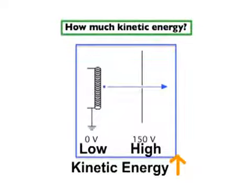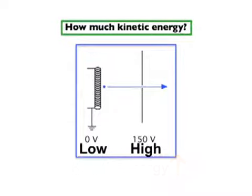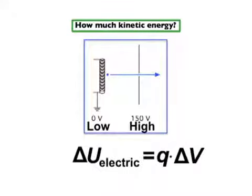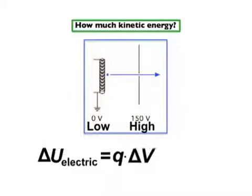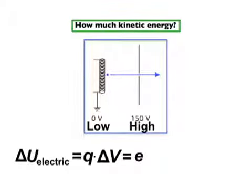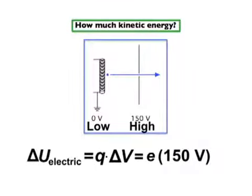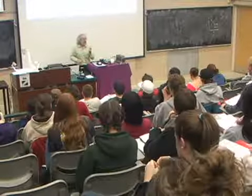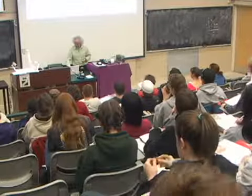Potential energy decreased and kinetic energy increased. Question: how much kinetic energy is there? Here's how we're going to solve this problem — we want to look at the magnitudes, don't worry so much about the signs. We know the change in electric potential energy is equal to the charge Q times the change in electric potential. That's our relationship. So I could put in the charge on the electron, which is 1.6 times 10 to the minus 19 coulombs, and the difference in potential is 150 volts. We did that last time, but there's another way to think about it — I want to introduce a new unit.